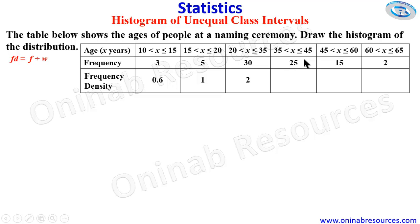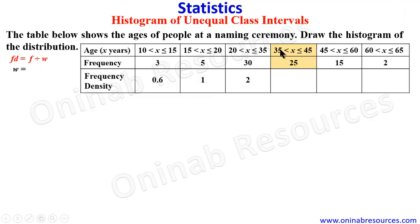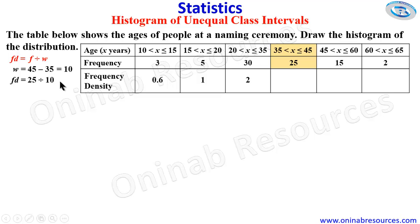For the next class interval, we calculate the width: 45 minus 35 gives 10. To calculate the frequency density, the frequency is 25 divided by 10, and that gives 2.5. So the frequency density for this class interval is 2.5.